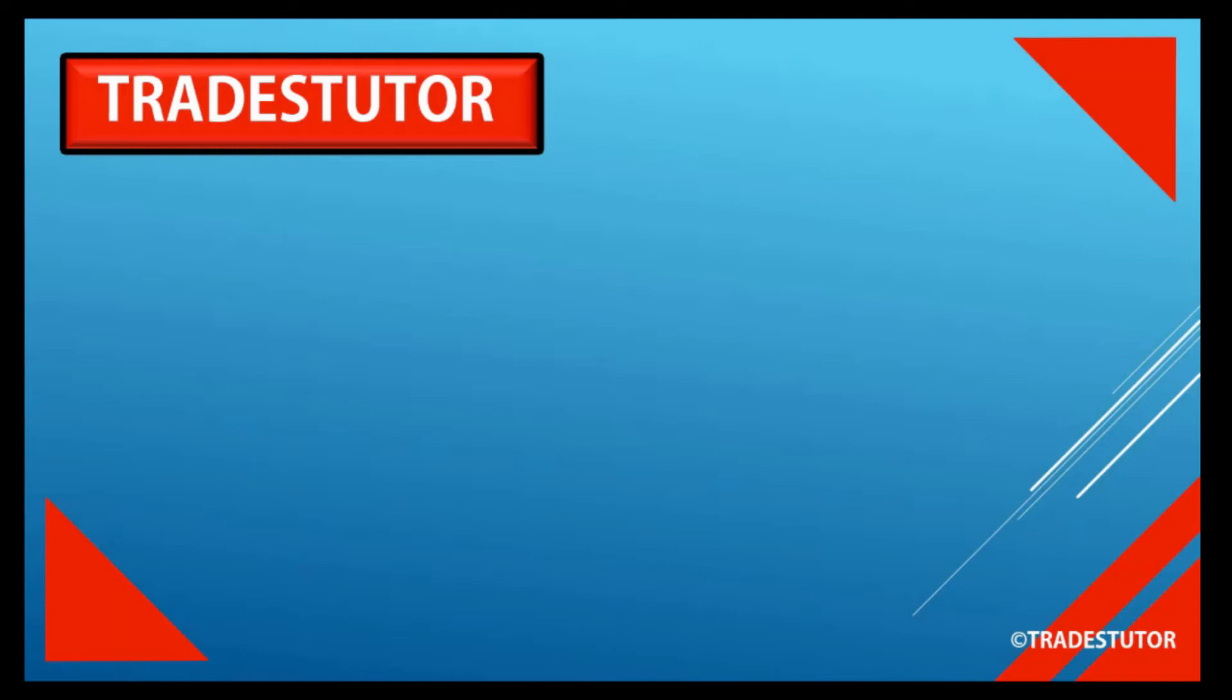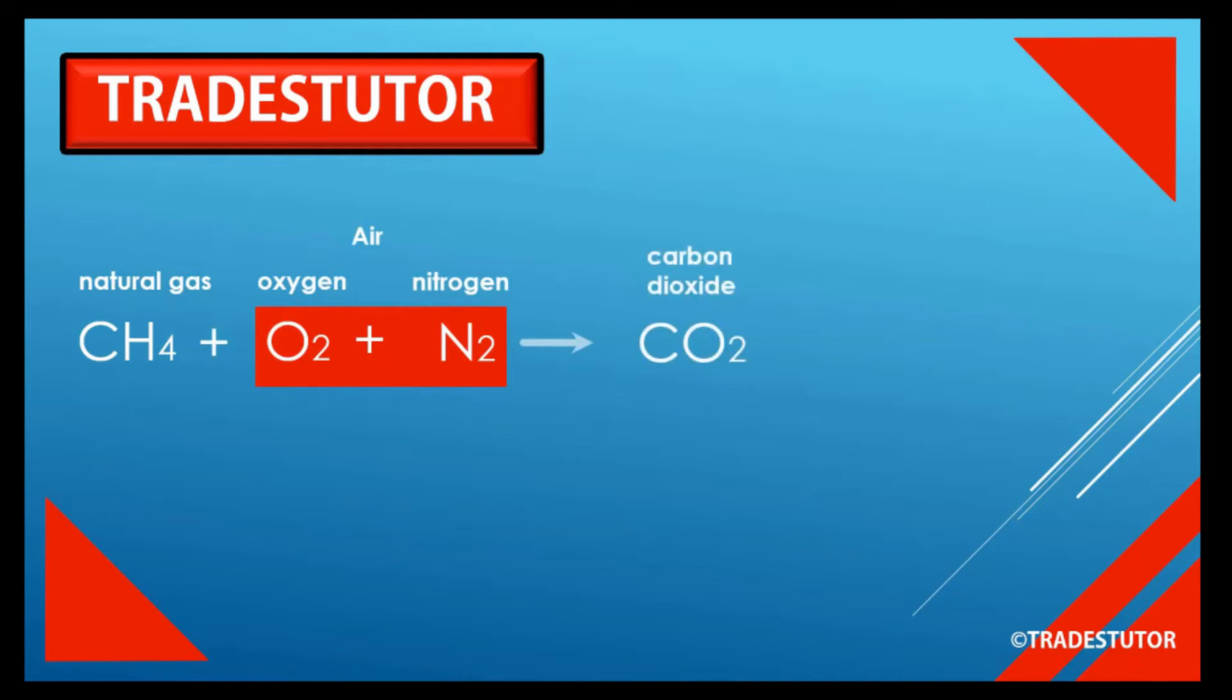First, we'll deal with the formula. We start with CH4, which is natural gas, and then we add oxygen and nitrogen. Together those two form air, so you take natural gas, add air, give it a spark, and we get our products of combustion. What we get is carbon dioxide and water vapor.